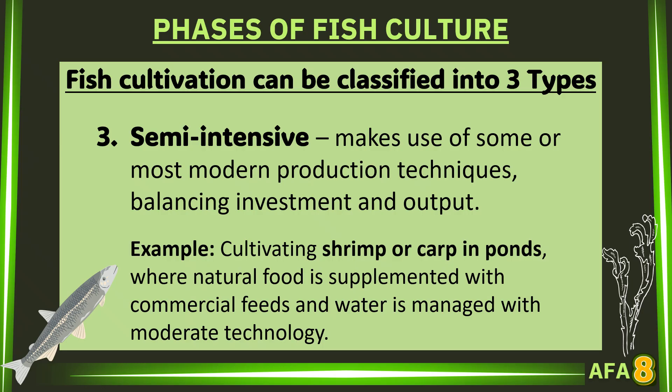Semi-intensive fish cultivation makes use of some or most modern production techniques, balancing investment and output. Example: cultivating shrimp or carp in ponds, where natural food is supplemented with commercial feeds and water is managed with moderate technology.